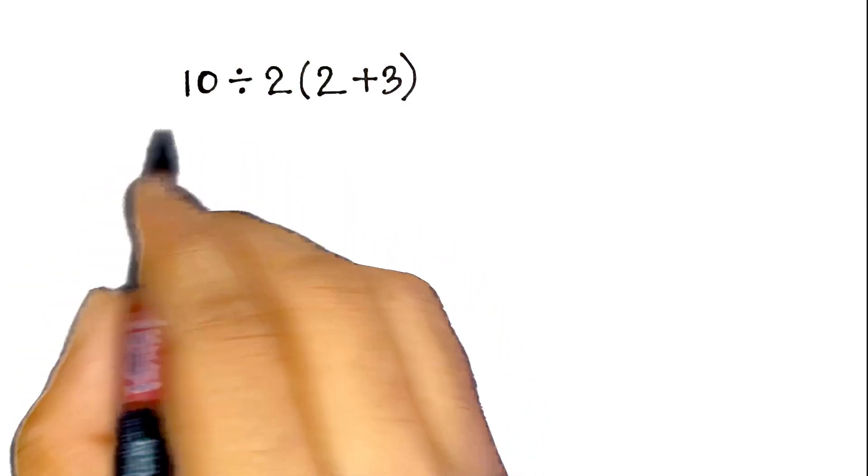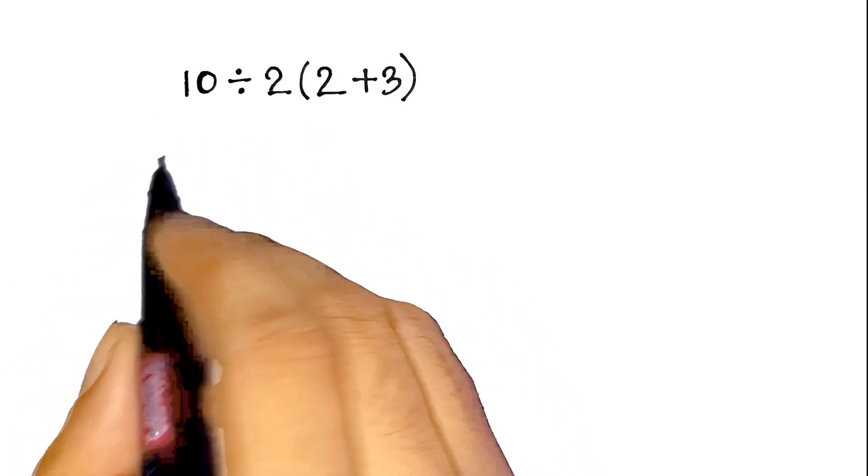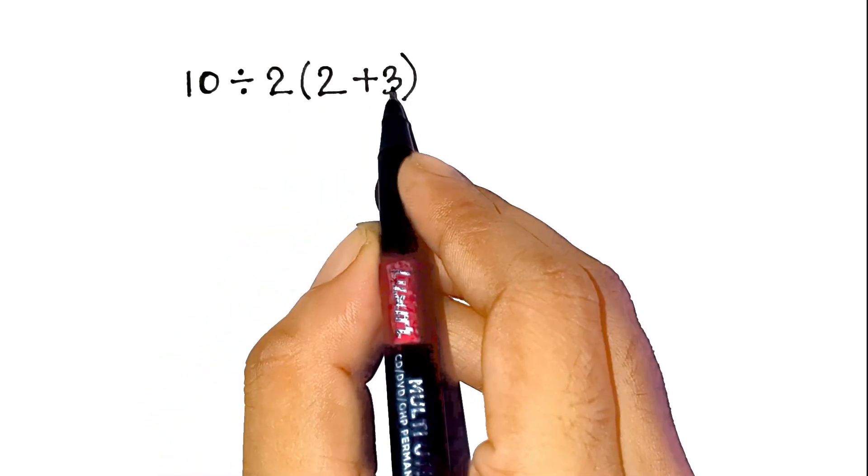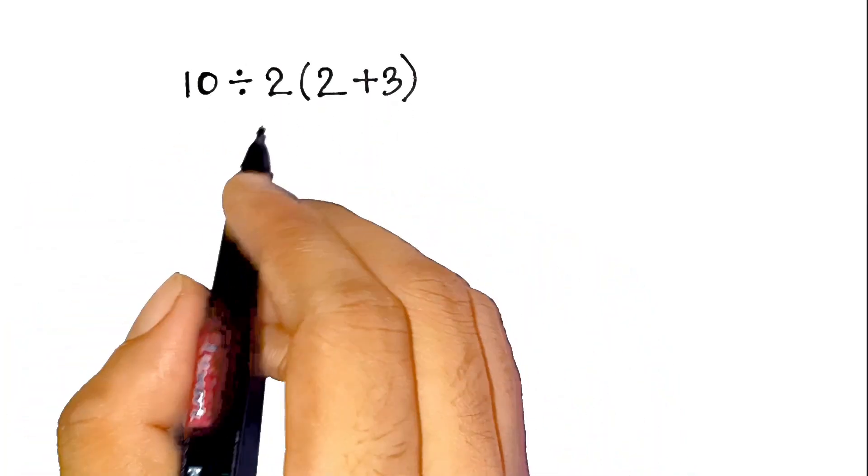Alright, let's see how sharp you are with this one. What's 10 divided by 2 open bracket 2 plus 3 close bracket? Sounds easy, right?